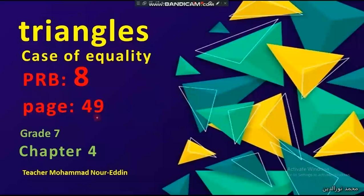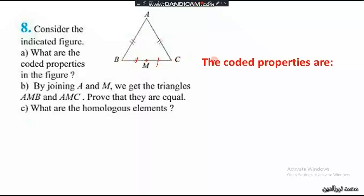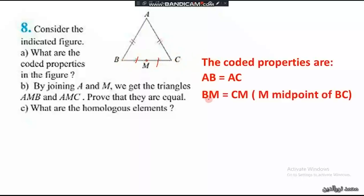Problem 8 on page 49: consider the indicated figure and identify the coded properties. In this figure, we have AB equals AC and M is the midpoint of BC. So the coded properties are AB equals AC and BM equals CM, or we could say M is the midpoint of BC.